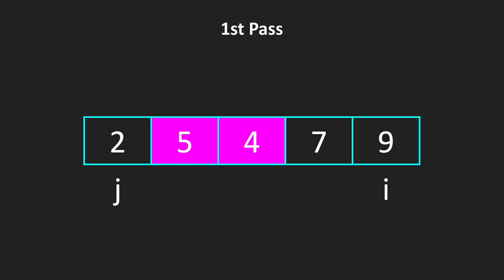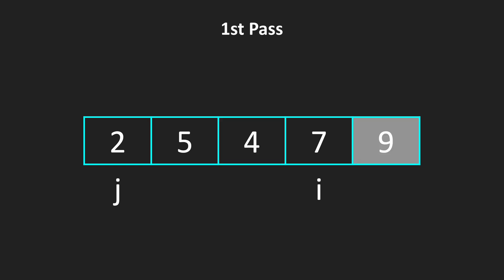Let's take one more example. Let's say that we have 2, 5, 4, 7, and 9. In our first pass, the only two elements that we are going to swap is 5 and 4. So we have swapped 5 and 4. So we are moving our i, and in the second pass, we are not doing any swap. What does that mean? It means that we have already sorted our array. So we are breaking our loop, because our array is already sorted.